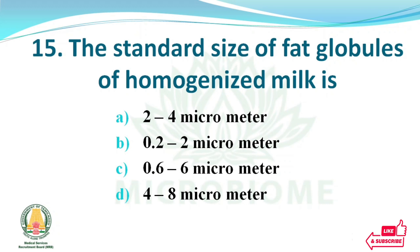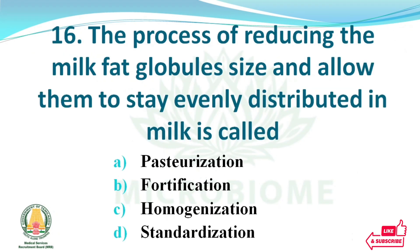The standard size of fat globules in homogenized milk — options: 2.24 micrometer, 0.222 micrometer, 0.626 micrometer, 4.28 micrometer. The right answer: option B, 0.222 micrometer. The process of reducing the milk fat globule size and allowing them to stay evenly distributed in milk is called — the right answer: option C, homogenization.